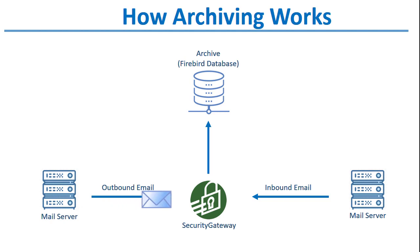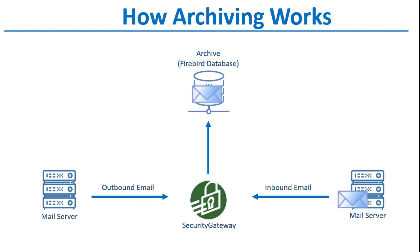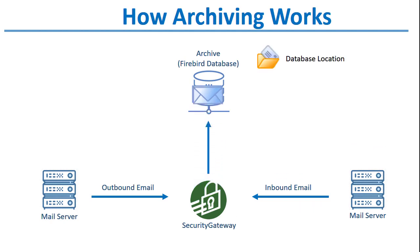When archiving is enabled, Security Gateway stores a copy of all inbound and outbound mail to a Firebird database. As an administrator, you can determine where that database is stored — you can use Security Gateway's internal Firebird database, or you can designate an external database.